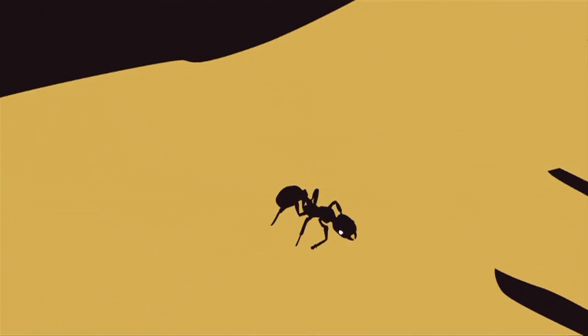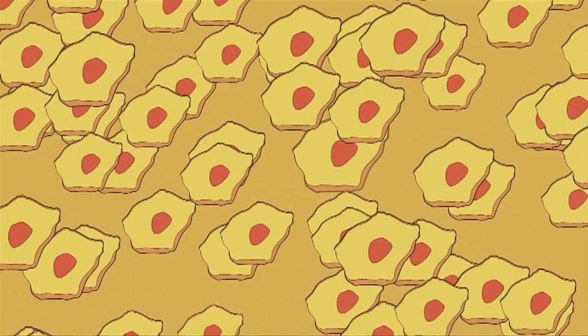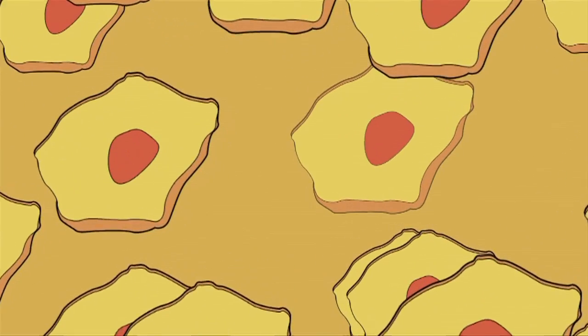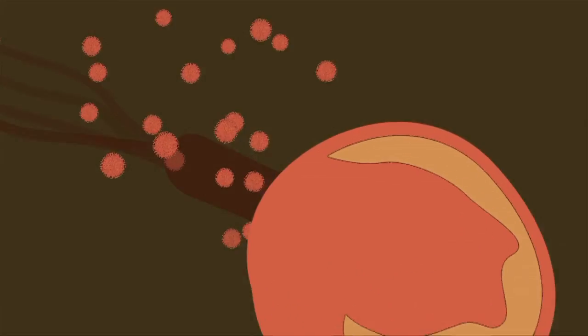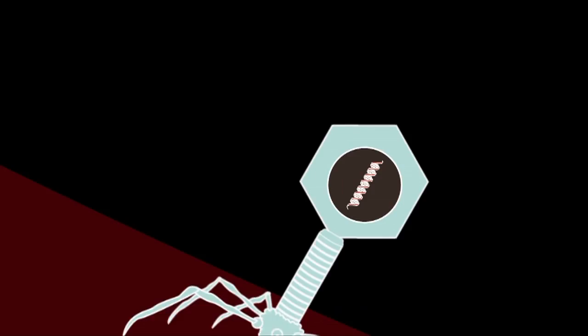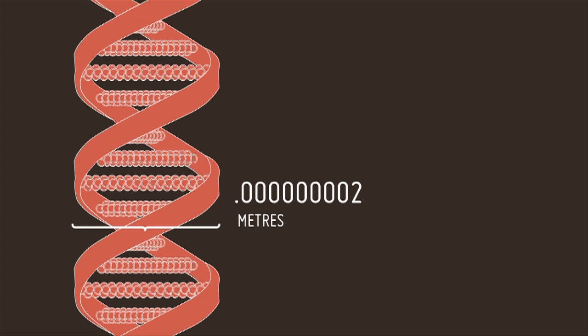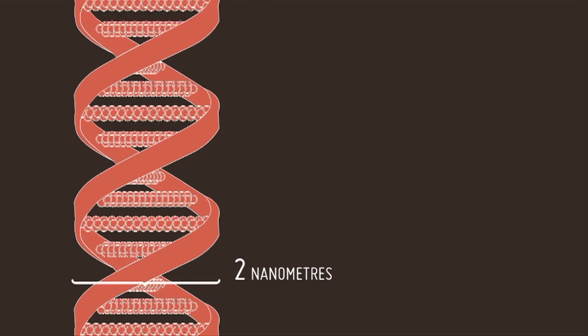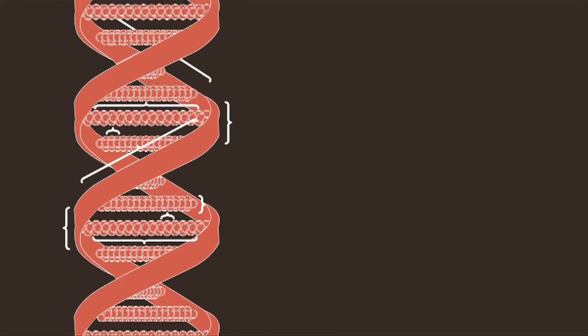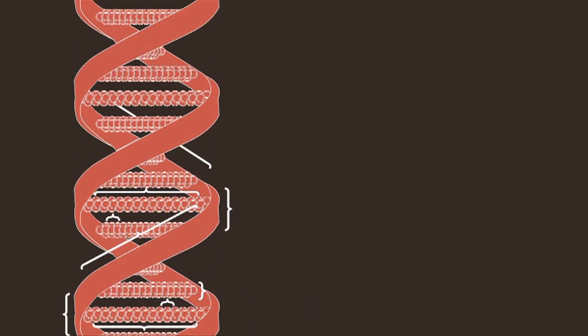Ants are a few millimetres long. Skin cells about 30 micrometres. We can't see things this small. A bacterium is about 2 micrometres. Smaller still are viruses and phages. And so we go down to DNA, our molecular blueprints. DNA is 2 billionths of a metre in diameter, or more conveniently, 2 nanometres. The units that we use to measure the building blocks of everything. Welcome to the nanoscale.